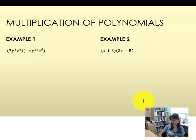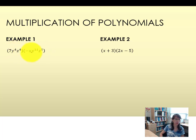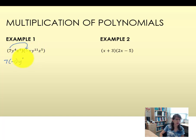When multiplying polynomials, we need to account for exponent rules — most likely the product rule. In our first example, 7y to the 4th, z to the 4th is multiplied by another monomial. So 7 is multiplied by the other coefficient, negative 1. Then we have our string of variable terms: y to the 4th, z to the 4th, x, y to the 11th, z to the 5th.